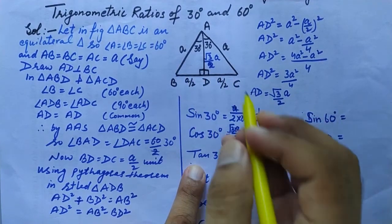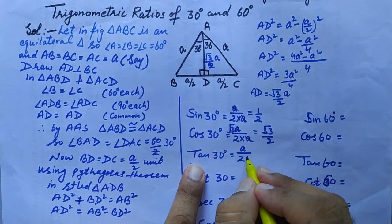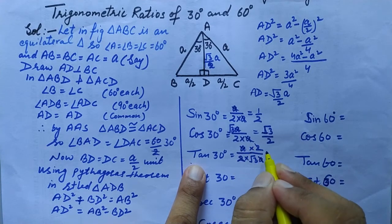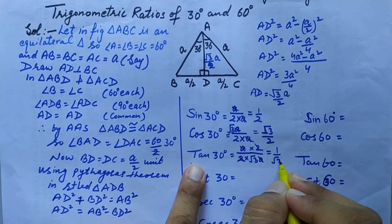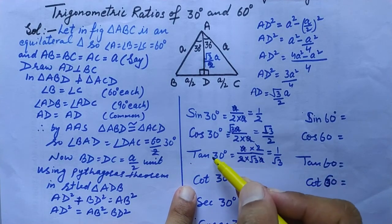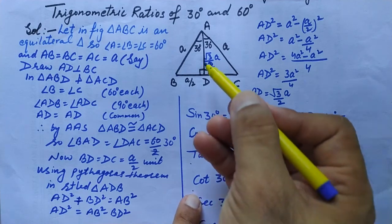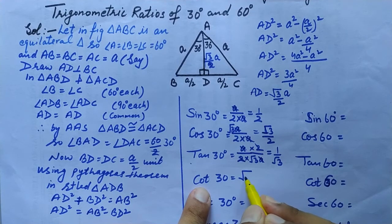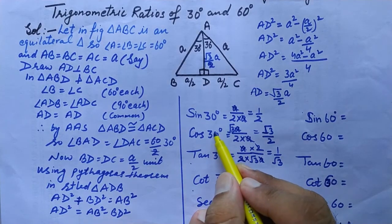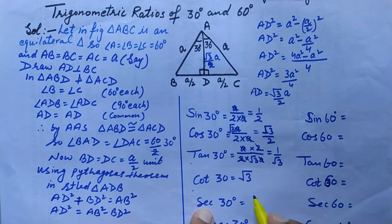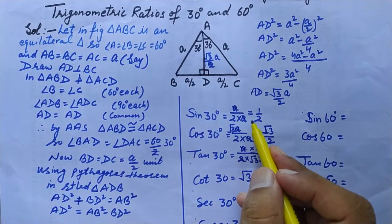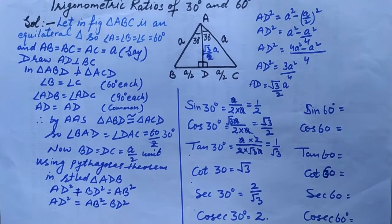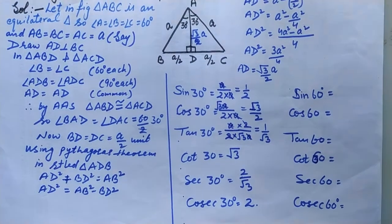For tan 30 = perpendicular/base = BD/AD = (a/2) / (√3a/2). The 2s and a's cancel, giving tan 30 = 1/√3. The reciprocal, cot 30 = √3. Sec 30, the reciprocal of cos 30, is 2/√3. Cosec 30, the reciprocal of sin 30, is 2.